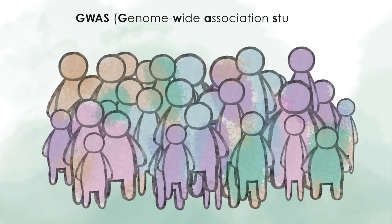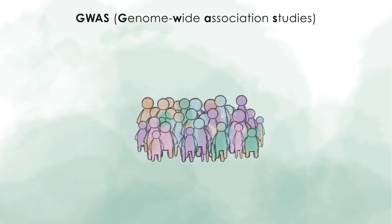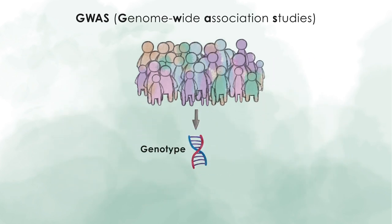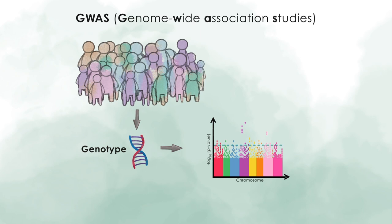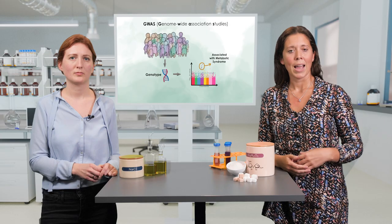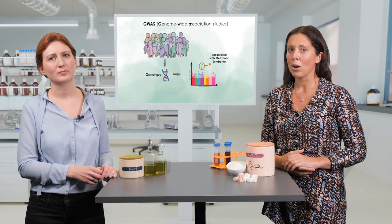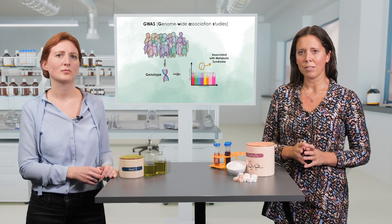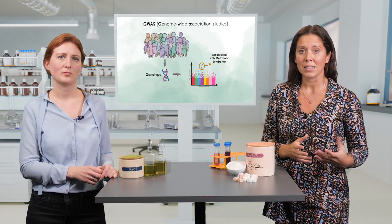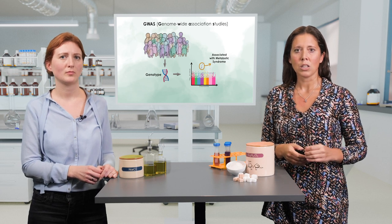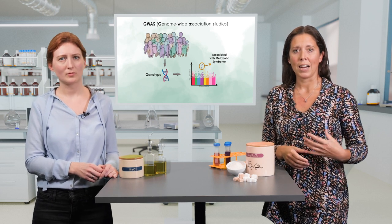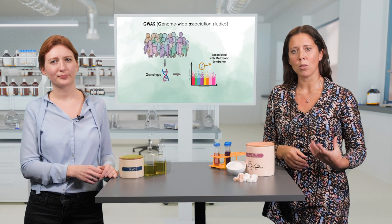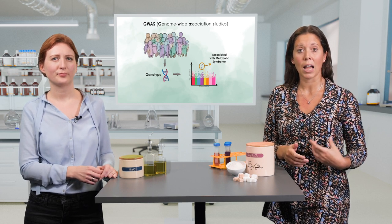With the development of high-throughput sequencing, the DNA of many individuals could be sequenced. This huge amount of data allows us to compare different groups of people with each other and, for example, search for mutations that are frequently associated with the metabolic syndrome. As we mentioned, metabolic syndrome is a multifactorial disease and therefore many different genes might be affected. These so-called genome-wide association studies, or GWAS, compare genetic variants across the genomes of many individuals to identify genotype-phenotype associations.